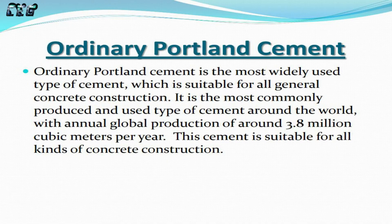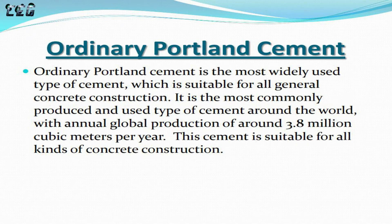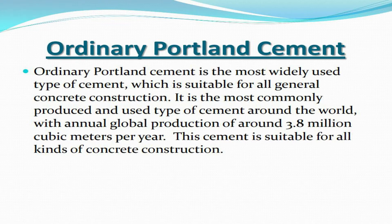Ordinary Portland Cement is the most widely used type of cement, which is suitable for all general concrete construction. It is the most commonly produced and used type of cement around the world, with annual global production of around 3.8 million cubic meters per year. This cement is suitable for all kinds of concrete construction.